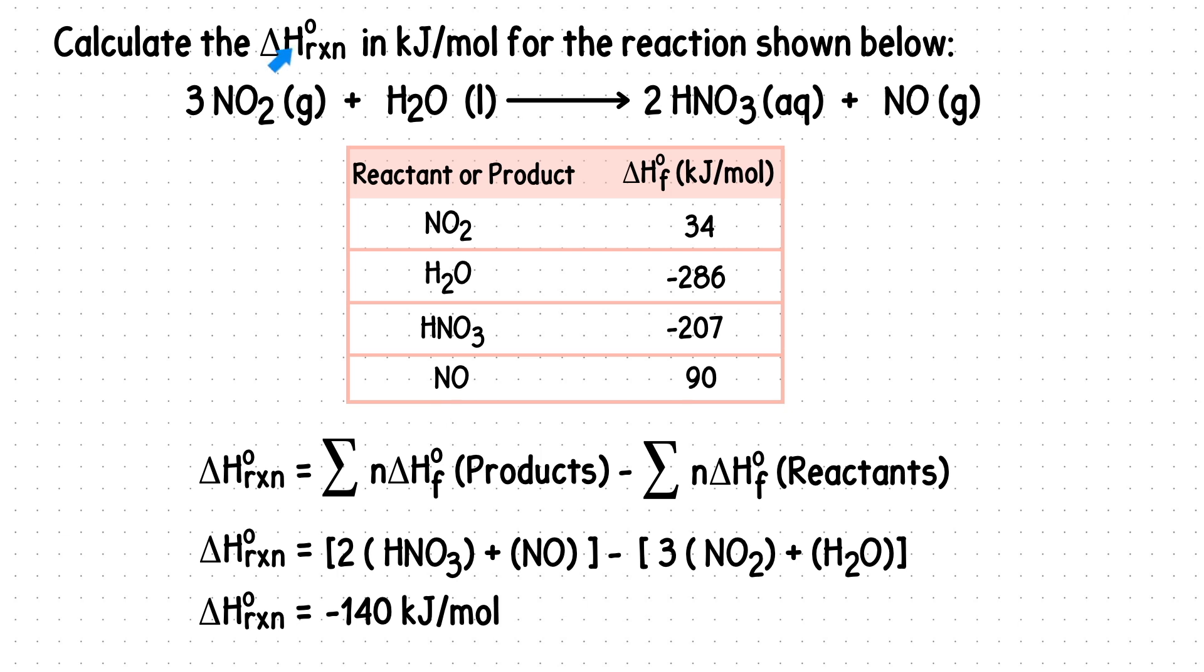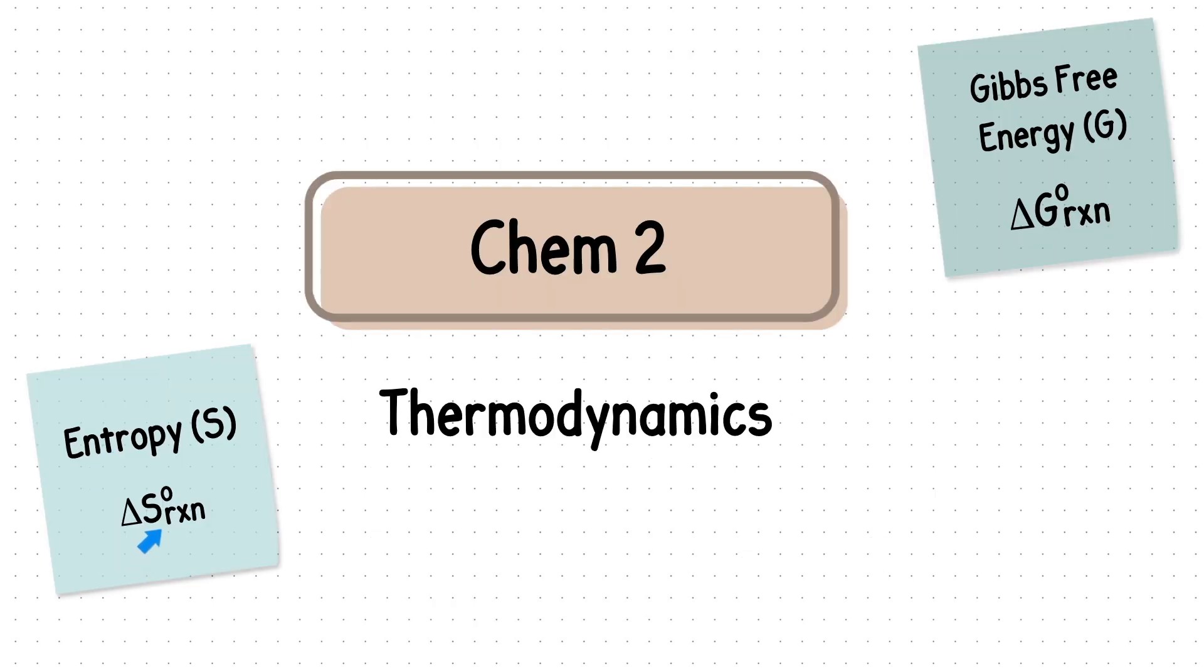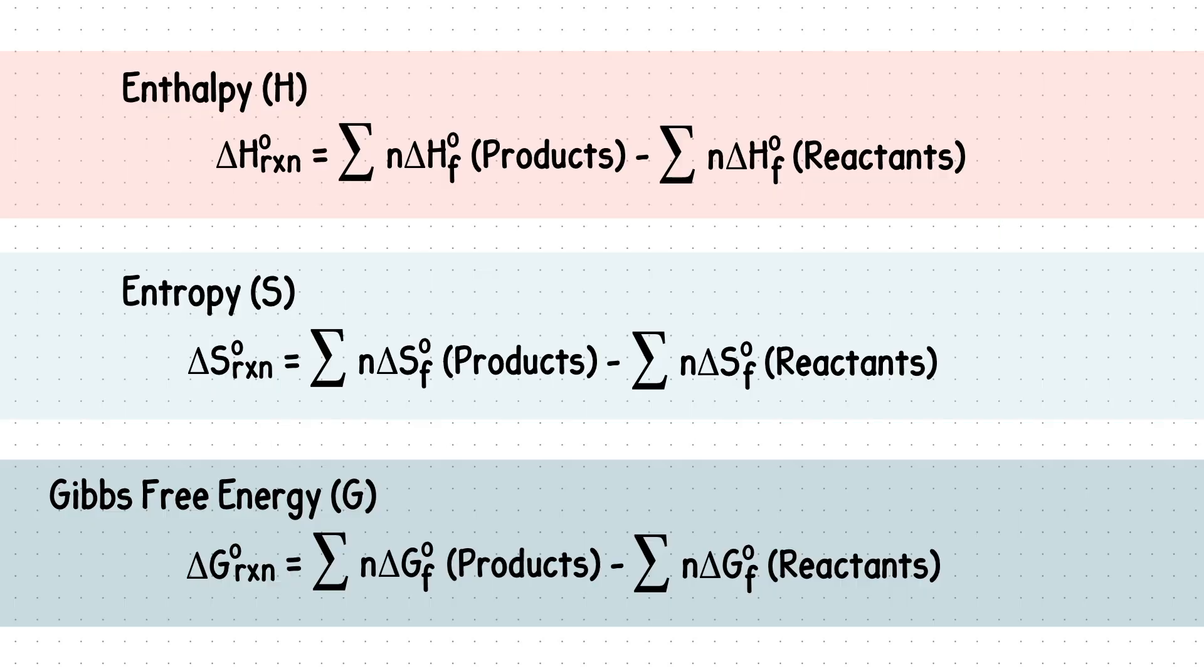Besides finding the standard enthalpy of the reaction, you will also be asked to find the standard entropy of the reaction, or the standard Gibbs free energy of the reaction. To do this, you would use the same formula as before, just for entropy or Gibbs free energy.